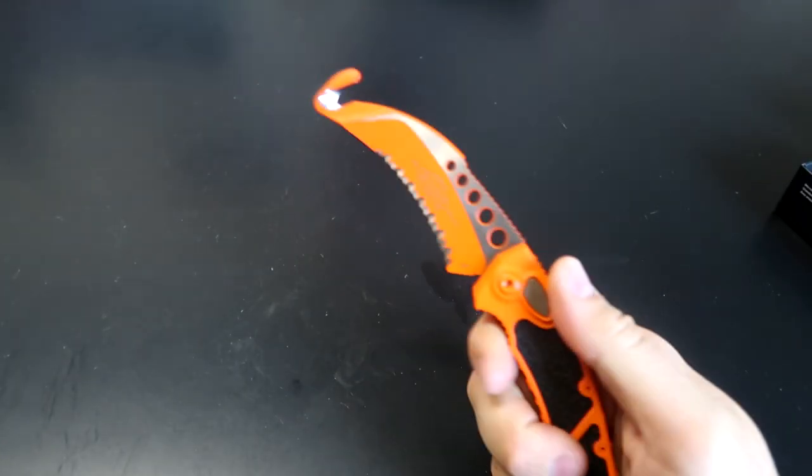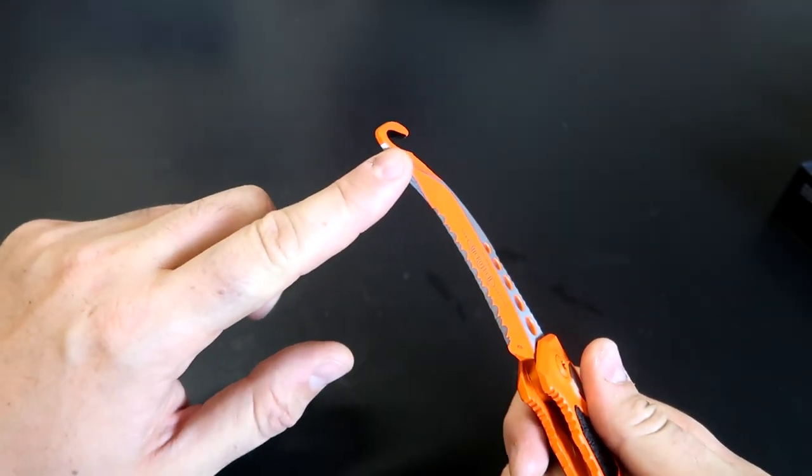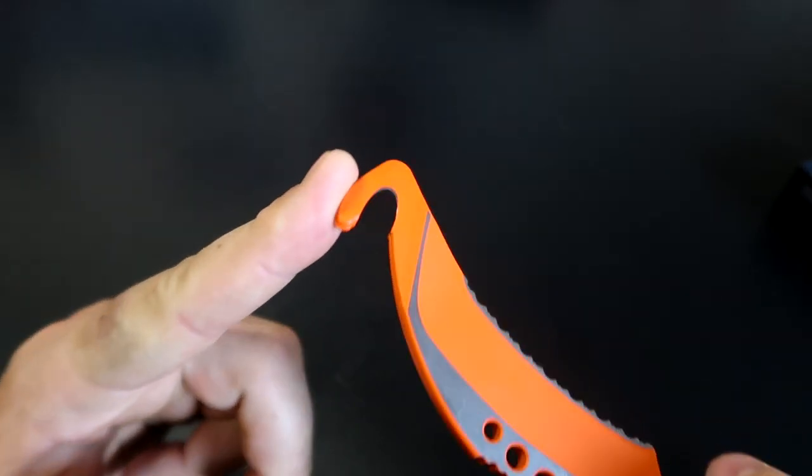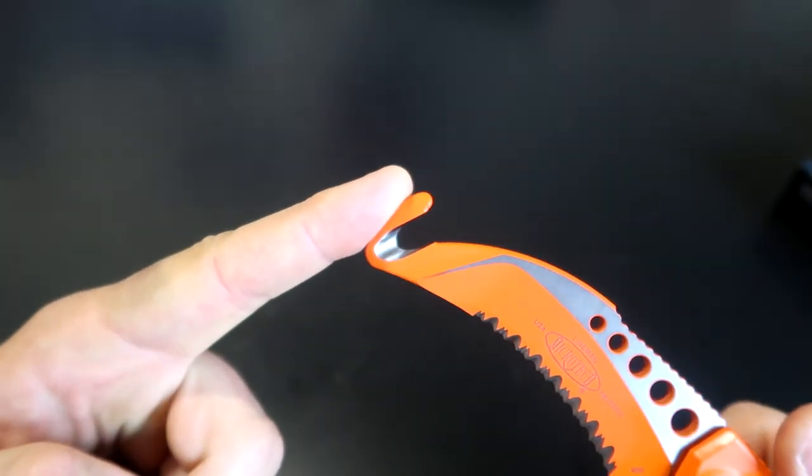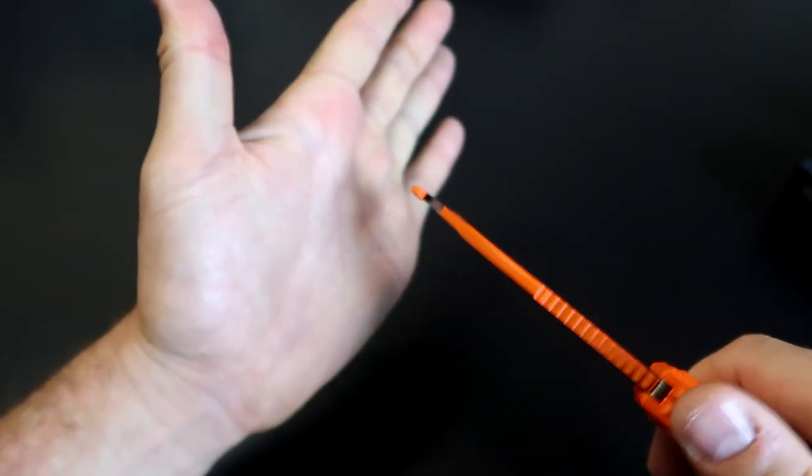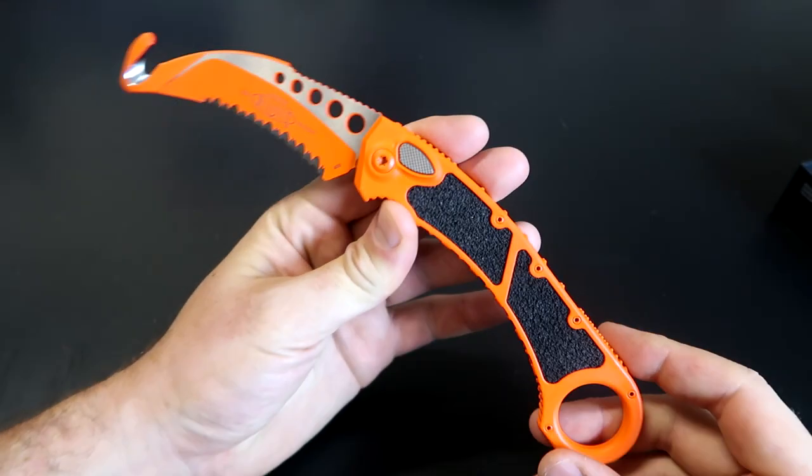This is really good. What's so different about it? Serration, and then right here is not sharp at all, and this is not sharp either. But this right here is like a seat belt cutter, so you can go in and cut the seat belt, any kind of rope, whatever. This is quite unique. Look at that color.